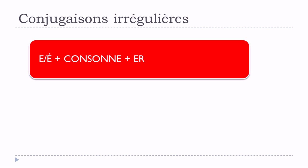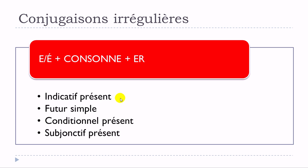That's it. Remember that for this subgroup of verbs — those ending with E, or É accent aigu, then a consonant, then ER — the following tenses will have these slight changes: indicatif présent, futur simple, conditionnel présent, and subjonctif présent. For all the other tenses, no modifications — just conjugate the verb according to the normal first-group rule.